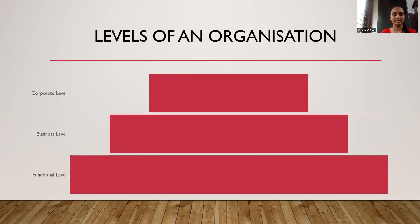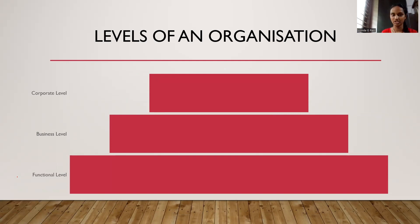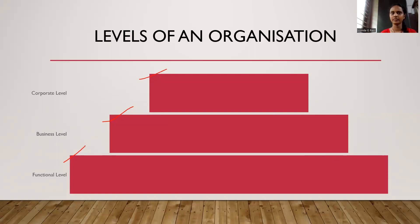We all know that there are three levels in an organization. The three levels are divided on the basis of who is at which level. In the topmost we have the corporate level, the middle management is the business level, and in the lower level is the functional level.